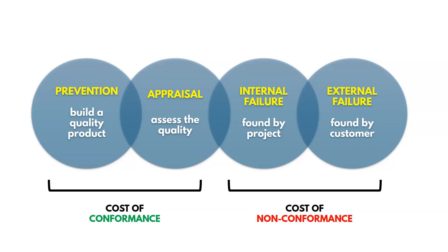If we don't have good quality, we have costs of non-conformance. Internal failure is when issues are found by the project team before the product makes it to the customer — that's better because we can fix it before the customer sees it. External failures are quality issues found by the customer — this is the worst-case scenario. If there's a defect the customer identifies, that's an external failure, and those become very expensive.